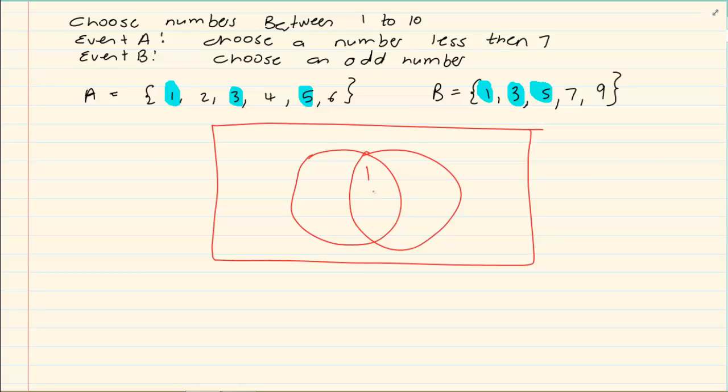In our overlap, we have 1, 3 and 5. Now for A, I am still short of 2, 4 and 6. And for B, I am short of 7 and 9.